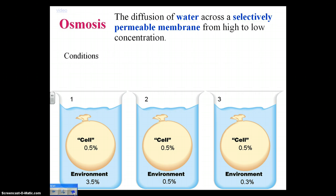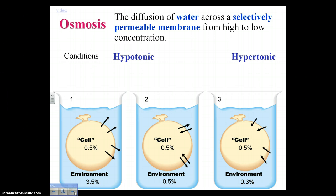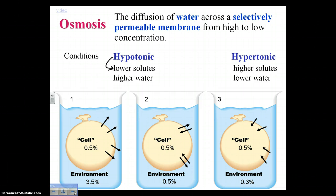Osmosis actually follows three different patterns — three different conditions. The first two are called, and these are easily confused, hypotonic and hypertonic. Hypotonic — hypo meaning lower — indicates a lower amount of solutes, and because it's lower, it has a higher concentration of water. Hypertonic — hyper — indicates a higher amount of solutes. We can begin designating this description of hypo versus hypertonic conditions.